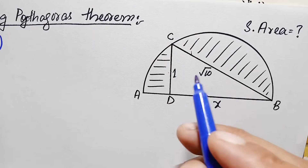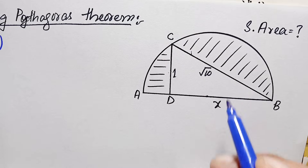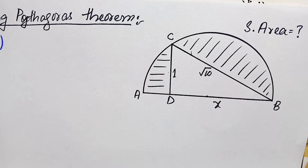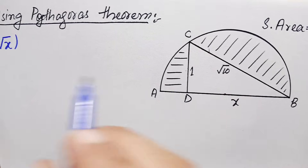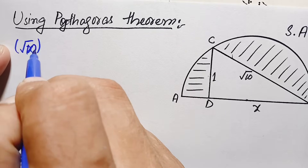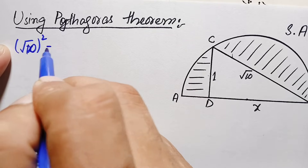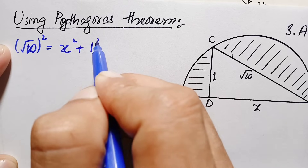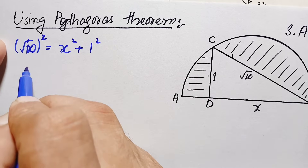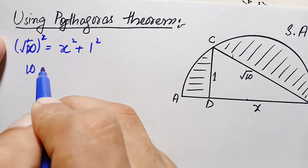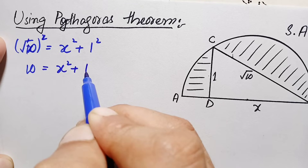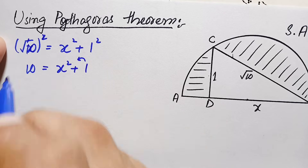The Pythagorean theorem states that hypotenuse squared equals base squared plus perpendicular squared. Here our hypotenuse is square root of 10, the base is x, and the perpendicular is 1. So this becomes: square root of 10, whole squared, equals x squared plus 1 squared. Squaring the left side gives us 10 equals x squared plus 1.